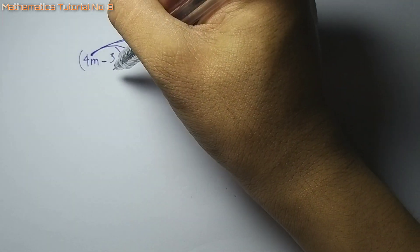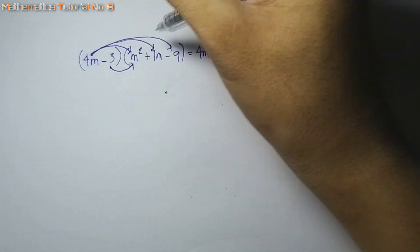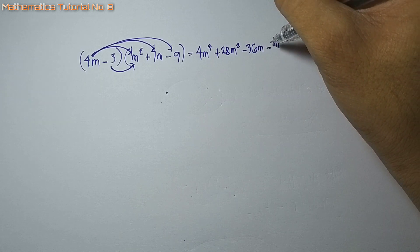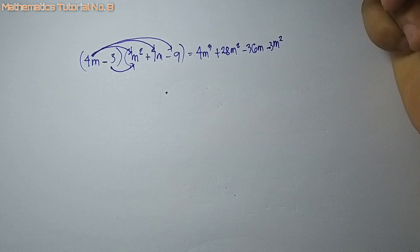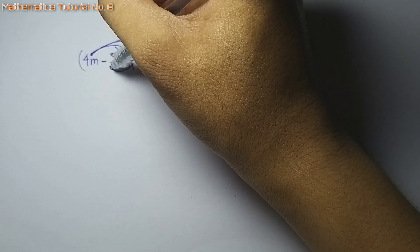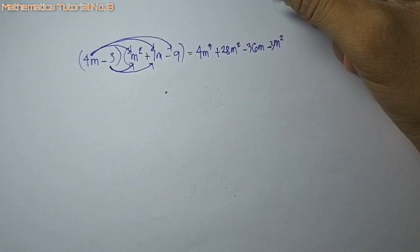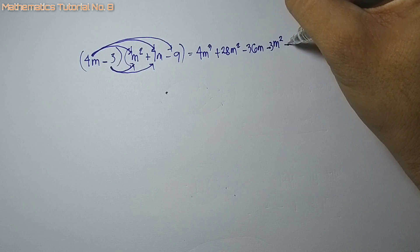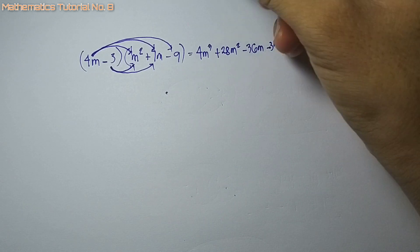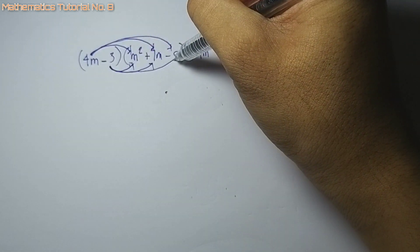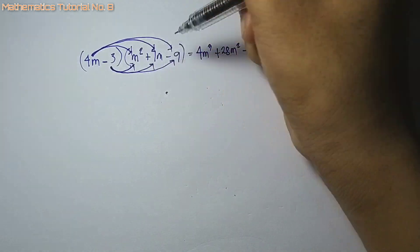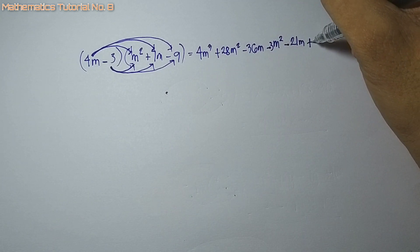Nadain ta sa isa — negative 3. Negative 3 times m squared, that is negative 3m squared. Negative 3 times 7m, that is negative 21m. Dayon sa last, negative 3 times negative 9, that is positive 27.